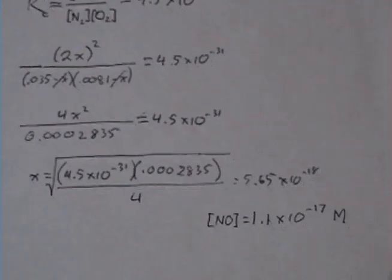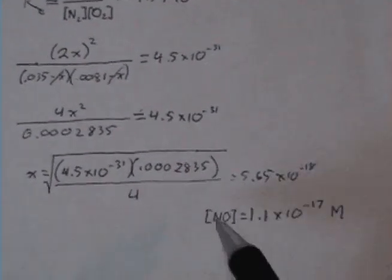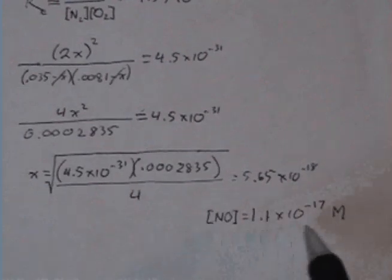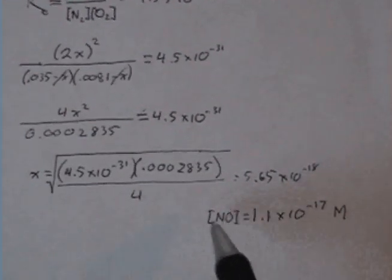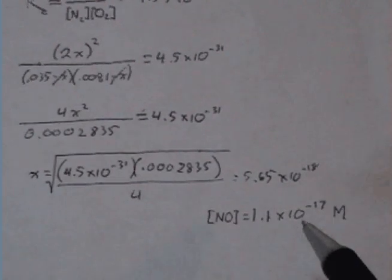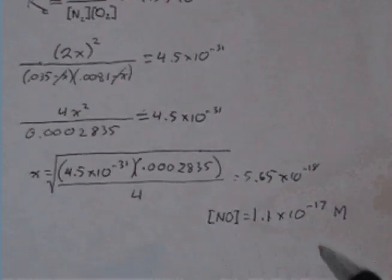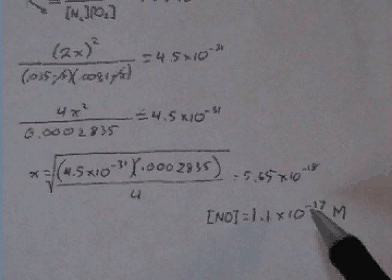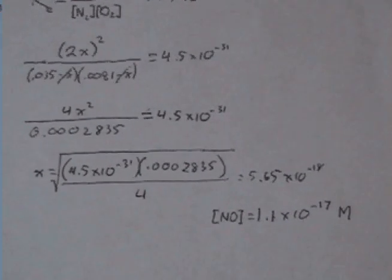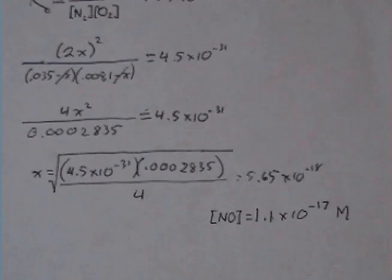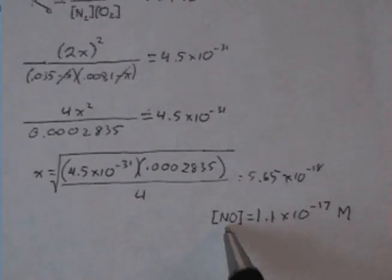All right, so we saw in a previous video that we calculated this value as the equilibrium concentration of nitrogen monoxide at room temperature in the air. Extremely small, right? So we know that smog, which here's a component of smog...